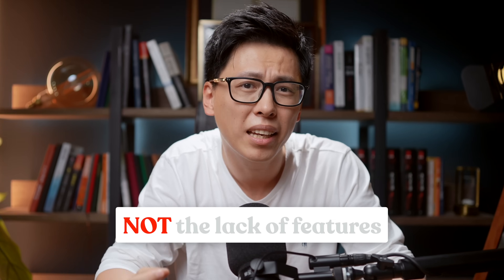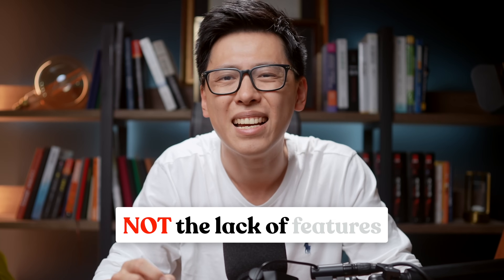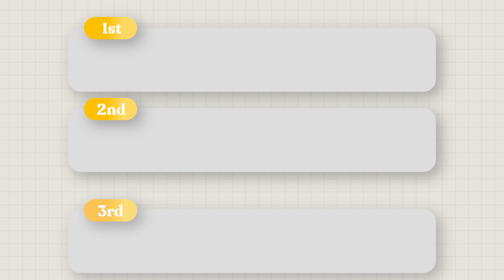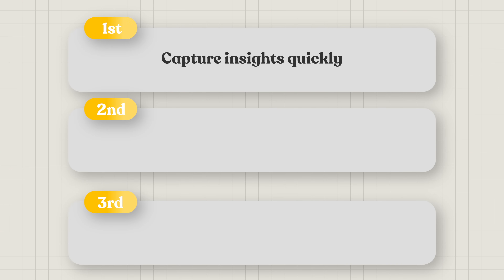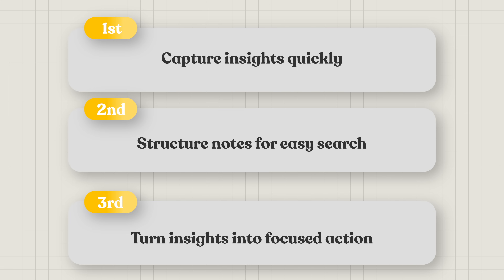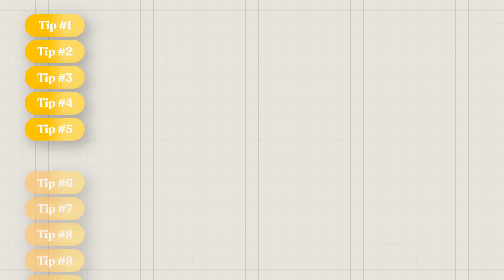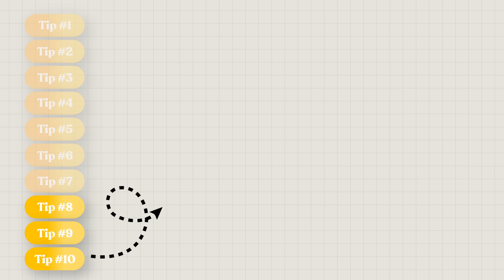When you think about it, the biggest problem with your note-taking system is not the lack of features, but its ability to do three things effectively. First is to capture insight quickly. Second is to organize them in a structured and searchable system, and only then push you to take action with focus and mental clarity. In this video, I will show you 10 powerful tips that make Apple Notes systematically improve your life — make it easier, more efficient, and better organized. The final three tips are what ultimately pushed me to switch from Notion.